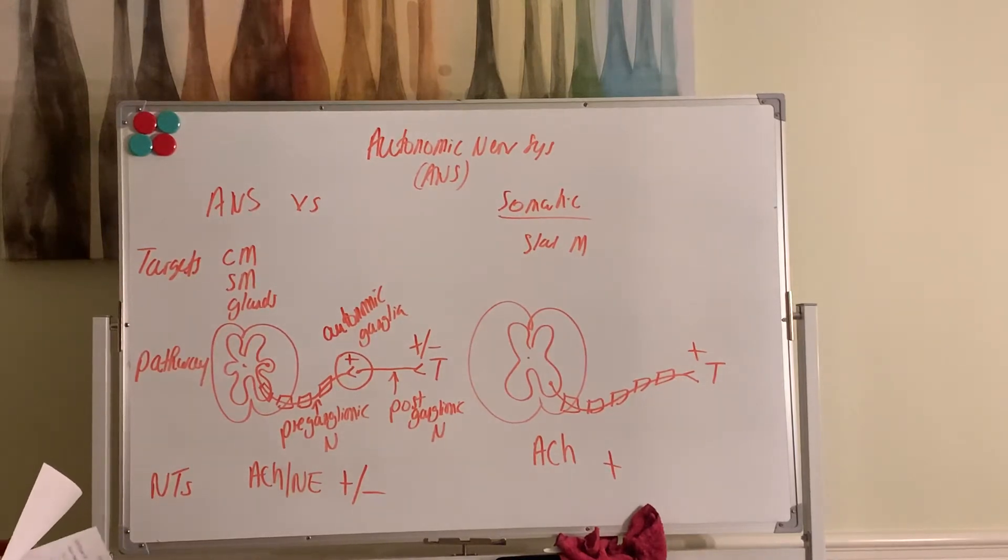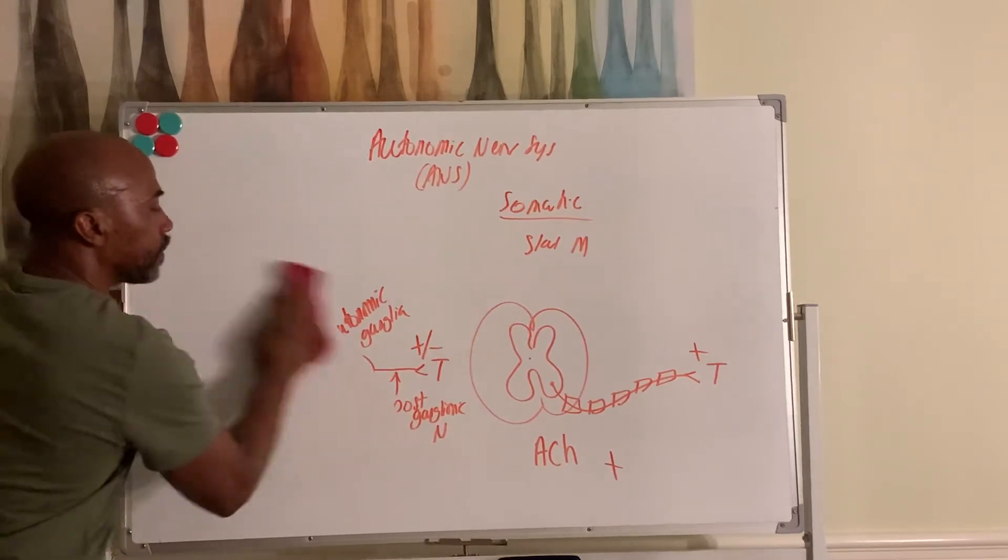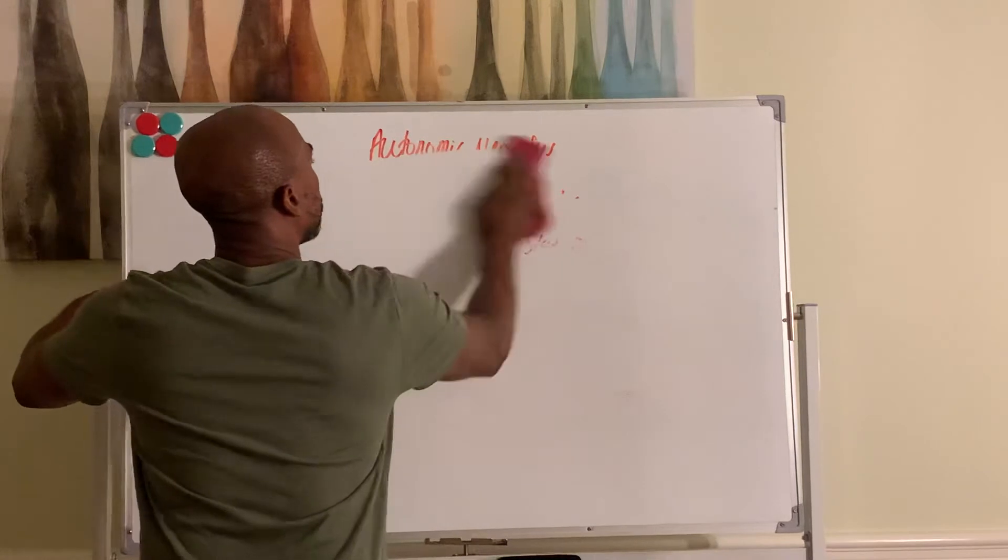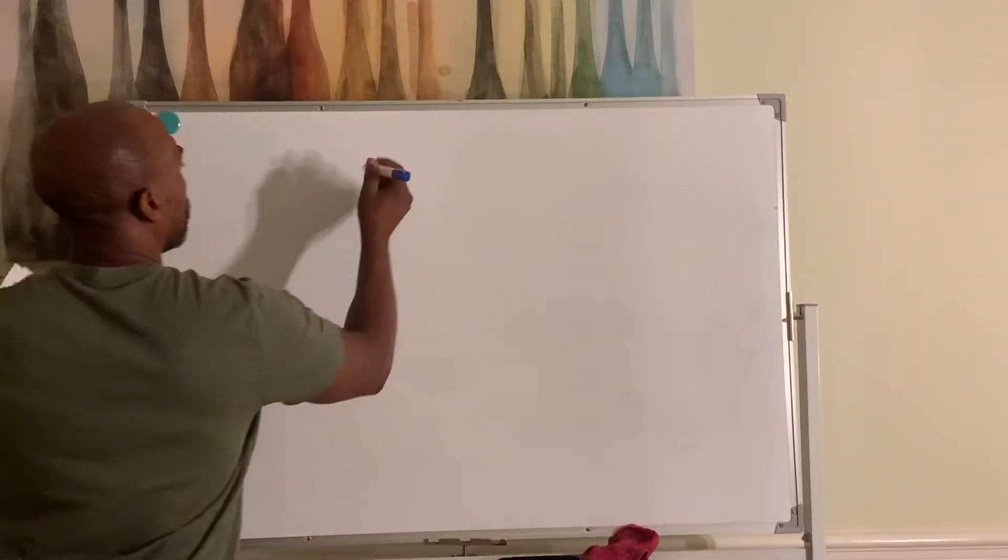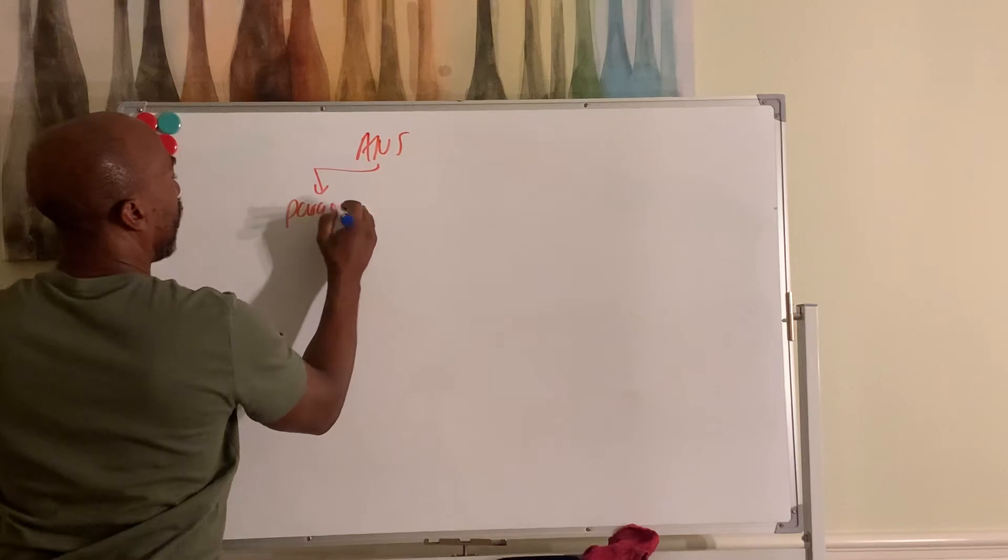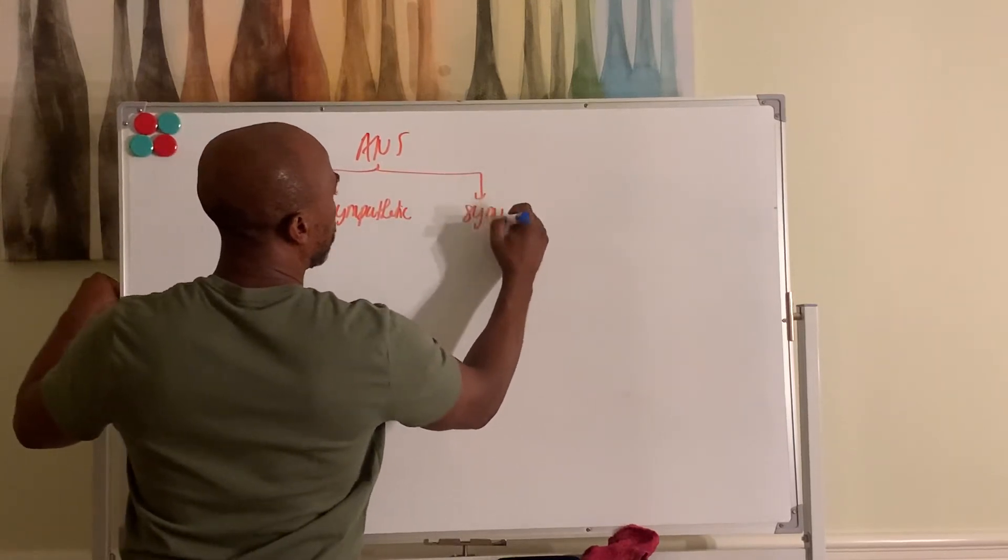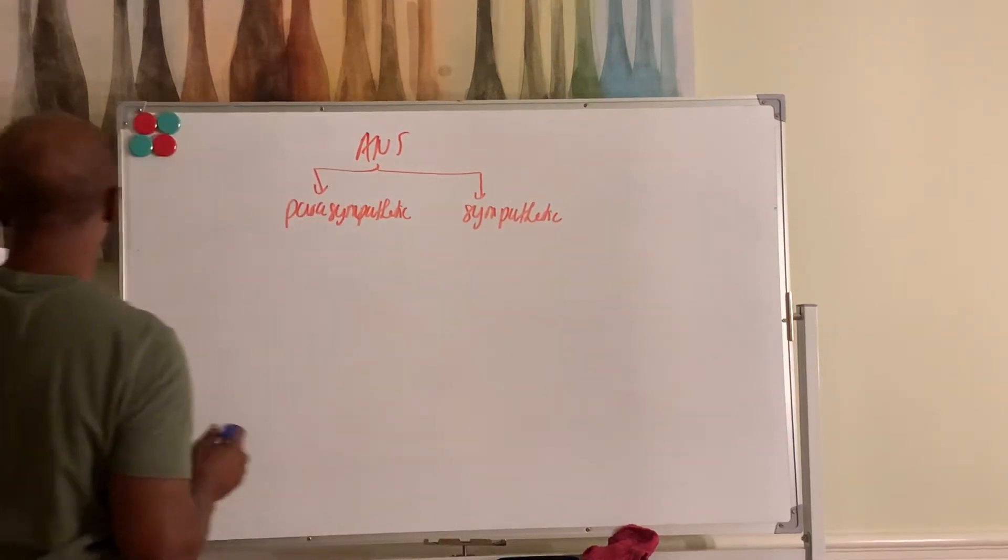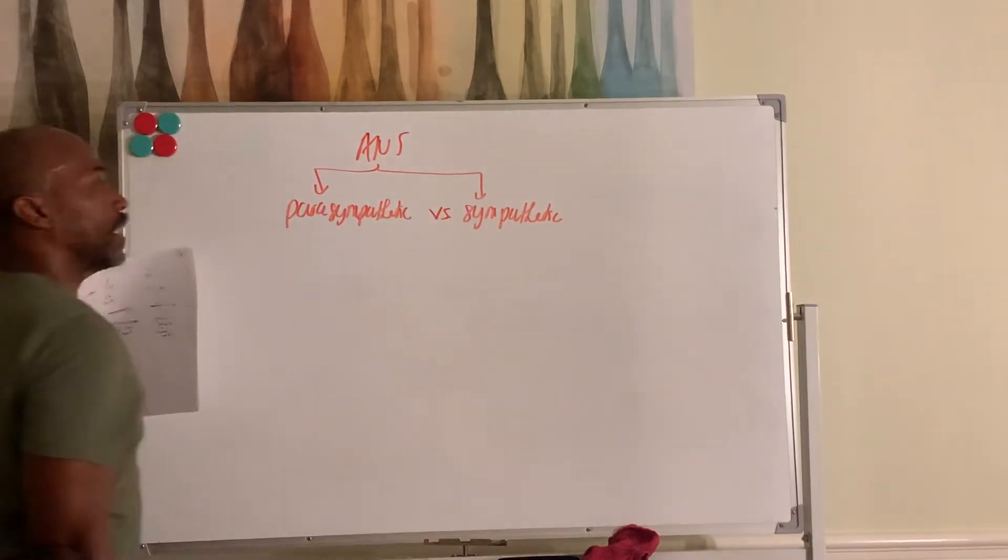So there goes the comparisons between the somatic nervous system and the autonomic nervous system. So let's look at the two divisions of the ANS. The ANS has two divisions. It has a parasympathetic division and a sympathetic division. So if we go with P versus S, the parasympathetic versus the sympathetic division.